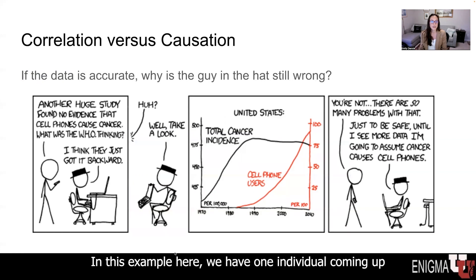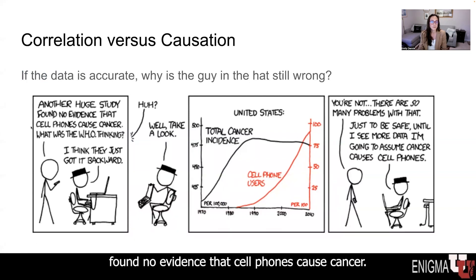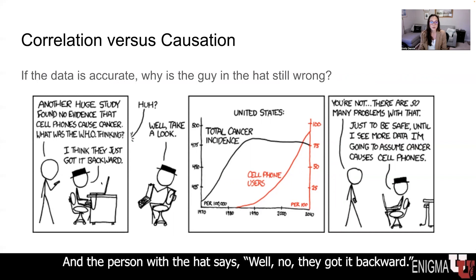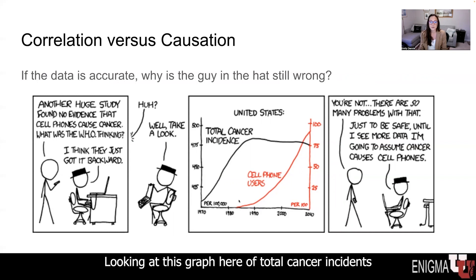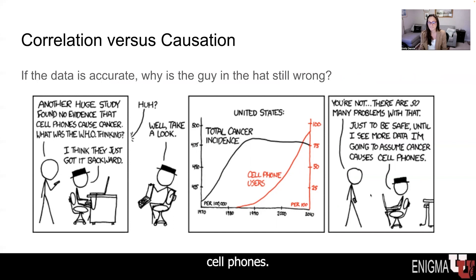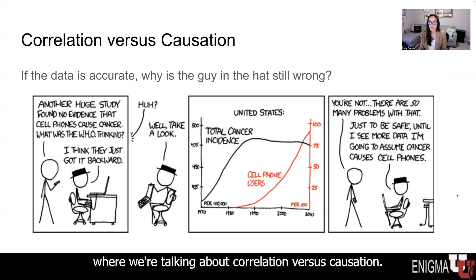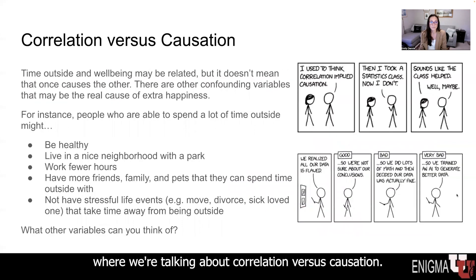Correlation is how closely linked two things are — do they tend to happen together? Causation is one actually causing another. In this comic strip example, one individual says 'another huge study found no evidence that cell phones cause cancer — what was the WHO thinking?' And the person with the hat says, 'well, no, they got it backward. Looking at this graph of total cancer incidents and cell phone users, they have concluded that cancer causes cell phones.' Obviously this is silly — it's an example of confusing correlation with causation.